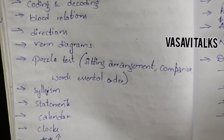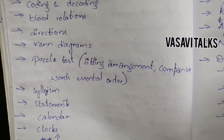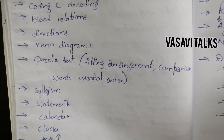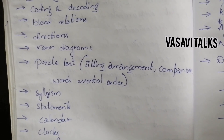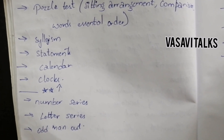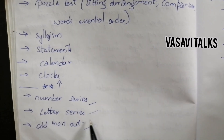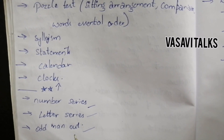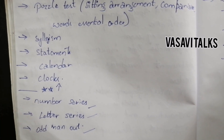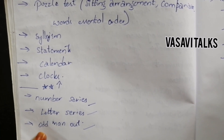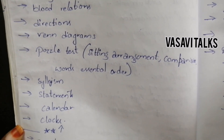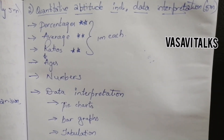Also covered are syllogism, statements, calendars, and clocks. For the maximum 5 marks, focus on puzzle test, sitting arrangements, and comparisons. Topics like number series and letter series you can choose if important, but be careful. We need clarity on preparation. These are the main important topics for general mental ability and reasoning.